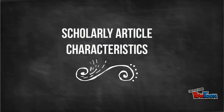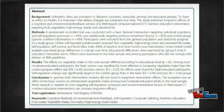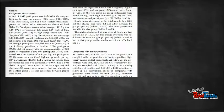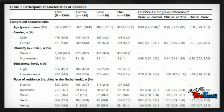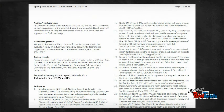Here are some characteristics of a scholarly article that can help. These articles typically contain an abstract which summarizes the main points, methodology and results sections, charts and graphs, technical or specialized vocabulary, a bibliography or list of references at the end, and numerous pages.